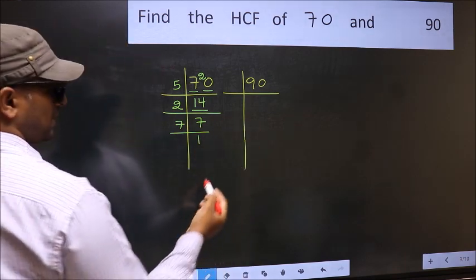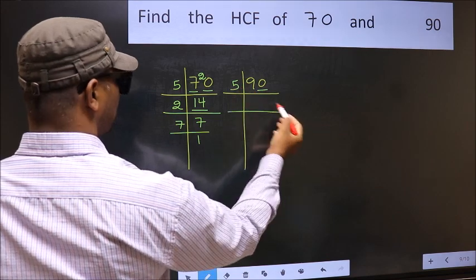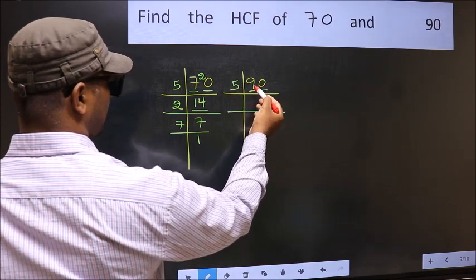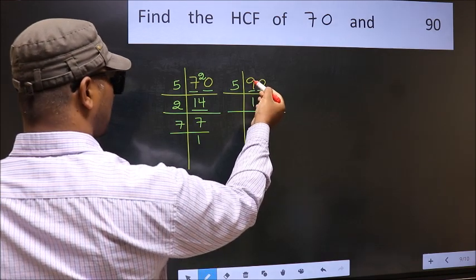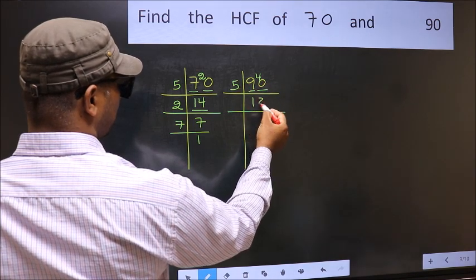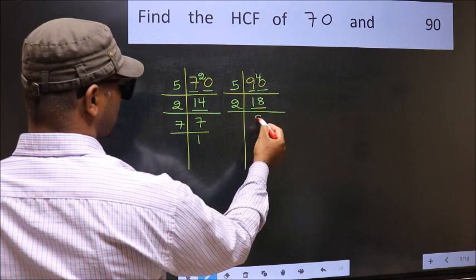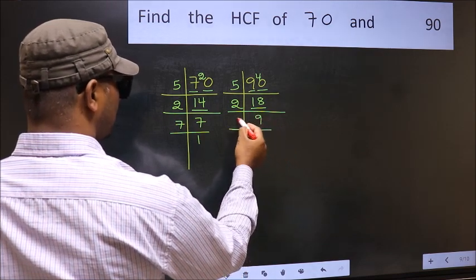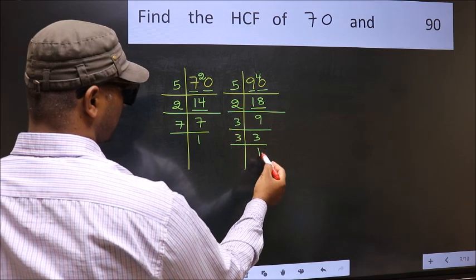Now the other number. Last digit 0 so take 5. First number 9. A number close to 9 in phi table is 5 once 5. 9 minus 5, 4, 4 carried forward 40. When do we get 40 in phi table? 5 eighths 40. Now 18 is 2 ninths 18. 9 is 3, 3 is 9. 3 is a prime number so 3 once 3.